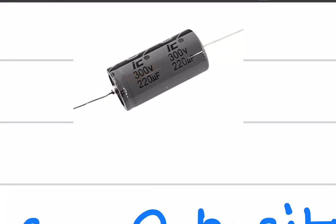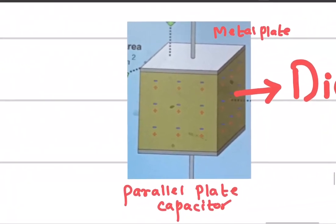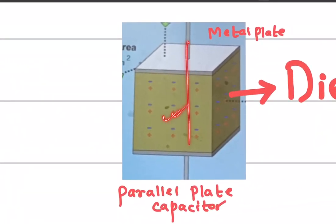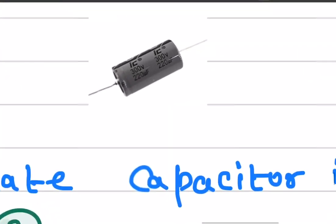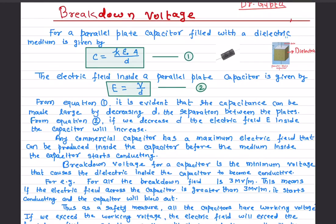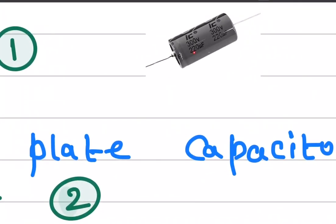All capacitors have a working voltage. If you exceed the working voltage, the insulating layer will become conducting and the capacitor will blow away. So the breakdown voltage is the minimum voltage that causes the dielectric inside the capacitor to become conductive. In this case, 300 volts is the breakdown voltage — the capacitor works fine under 300 volts, but exceeding it will blow the capacitor because the dielectric will start conducting.